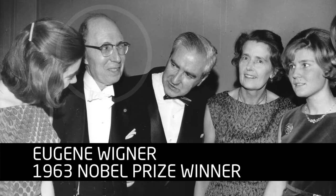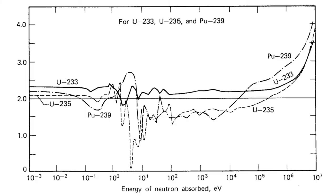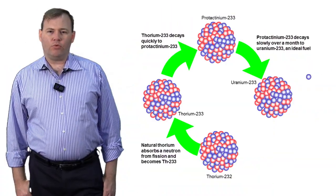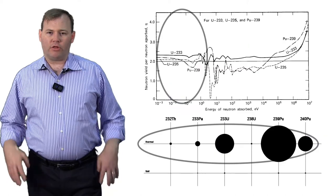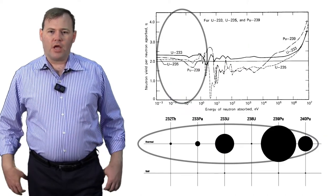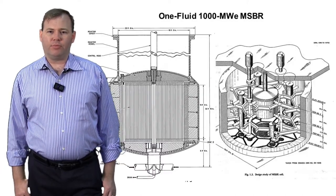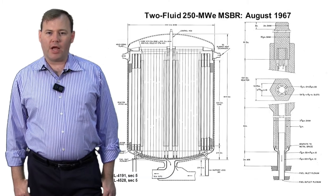Eugene Wigner, on the other hand, looked at these same pieces of information and reached a different conclusion - that thorium was a superior fuel and should be realized in a thermal spectrum, in a thermal breeder reactor. This opened up a number of possibilities with coolants and reactor configurations.